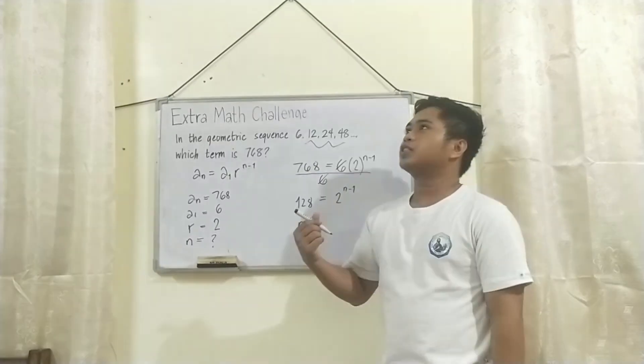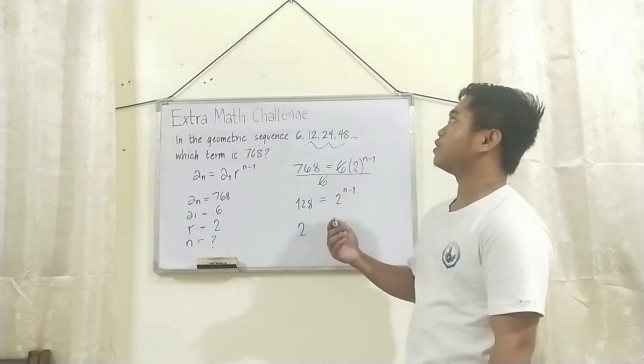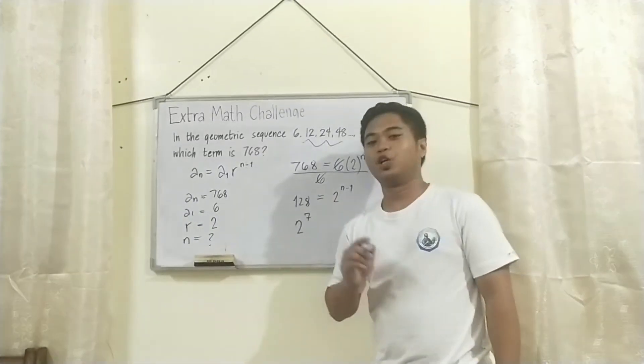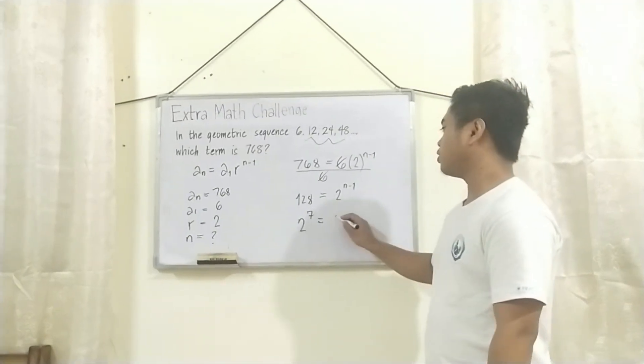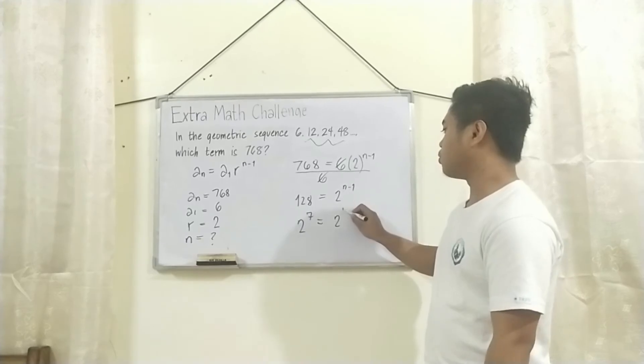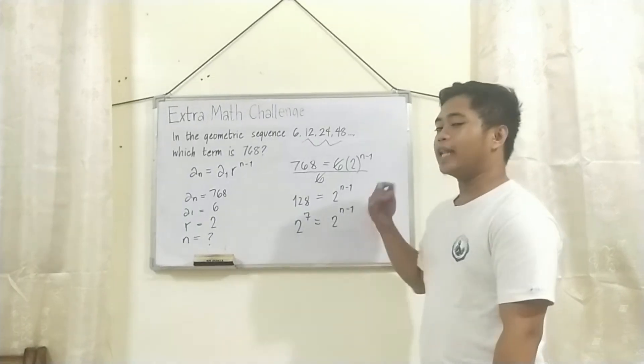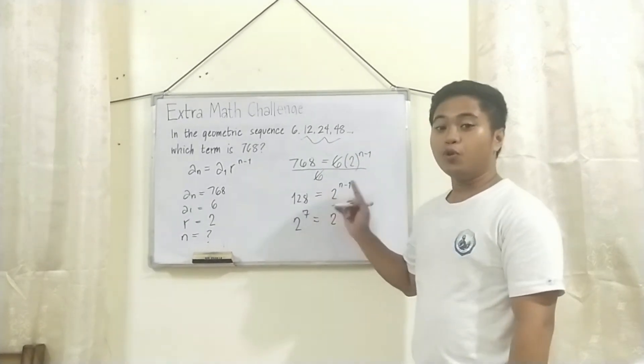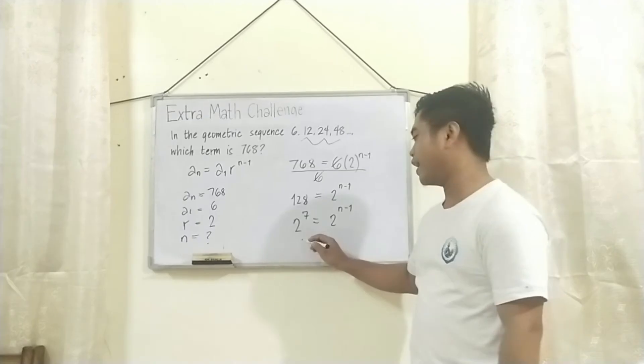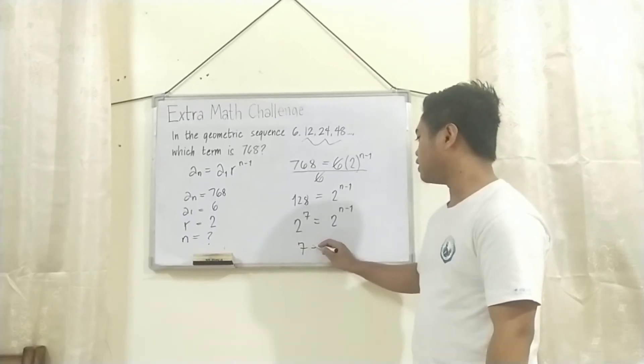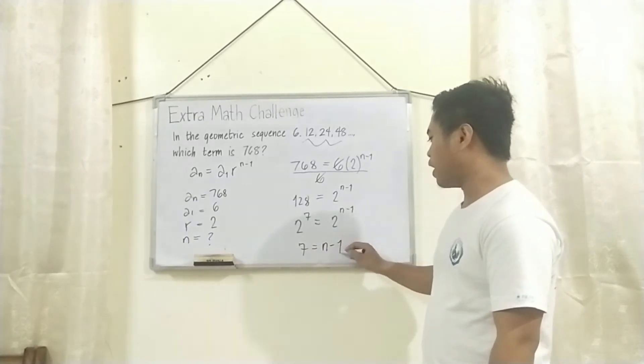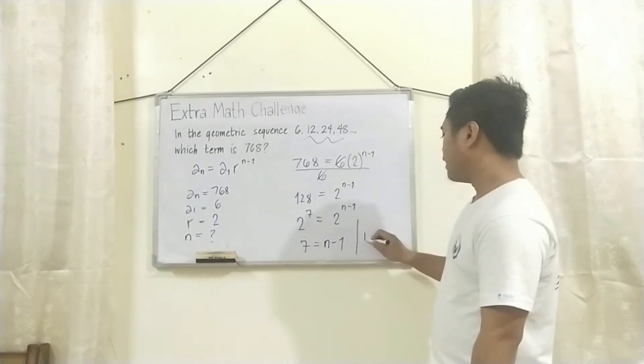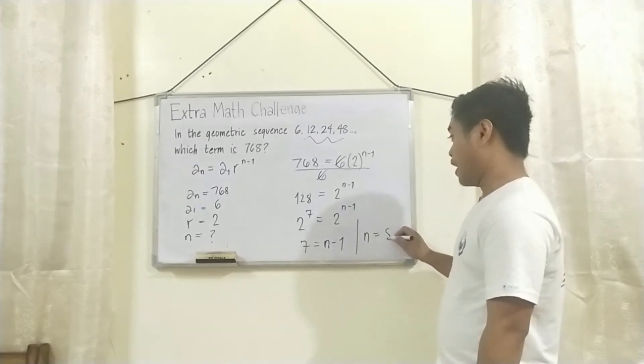Ano ba yung i-raise natin sa 2 to reach 128? 2 raised to 5 is 32 yan. 2 raised to 6 will have 64. So, yung 2 raised to 7, yan yung 128. I-equate natin dito sa 2 raised to n minus 1. And since pareho na ng bases, then i-equate na natin ngayon yung exponent kasi yung n yung hinahanap. So, we'll have 7 is equal to n minus 1. And by algebra, we will know that the value of n is 8.